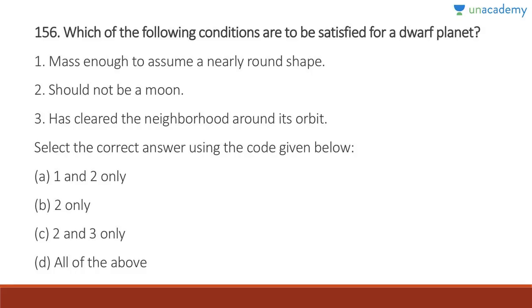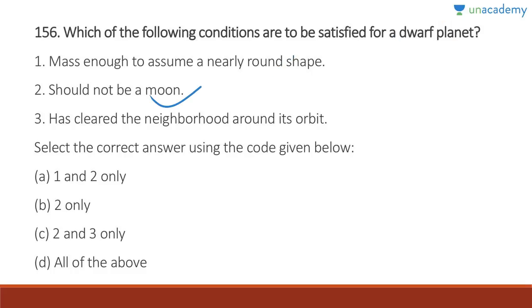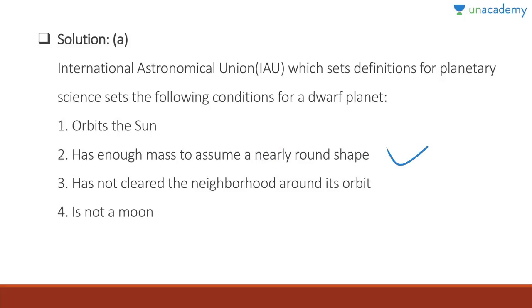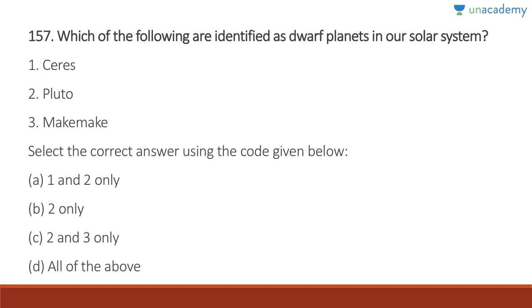Question 156: Which conditions must be satisfied for a dwarf planet? Having enough mass to assume a nearly round shape — 100% correct. Should not be a moon — 100% correct. Has cleared the neighborhood around its orbit — this is the definition for a planet, not a dwarf planet. Even if it has not cleared the neighborhood, it can still be a dwarf planet. Answer is A, one and two. The International Astronomical Union sets these conditions: orbit the sun, have enough mass for a round shape, have not cleared the neighborhood, and not be a moon.